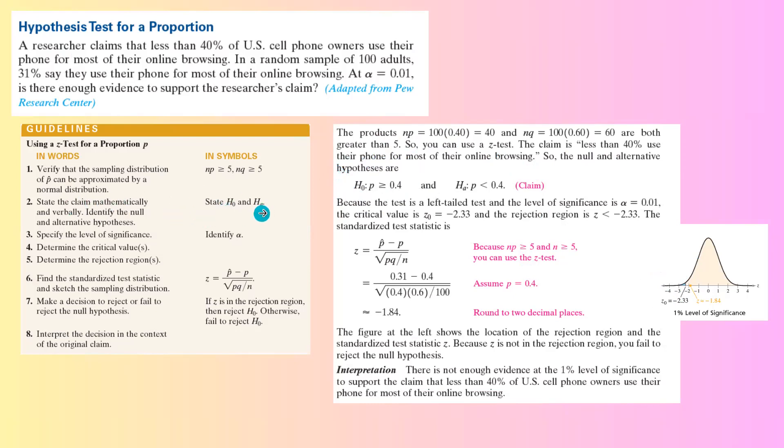Now that we state the null and alternative hypothesis, we identify alpha, which is 1%. We use alpha and the fact that it's a left-tail test to find Z value. Z is negative 2.33.